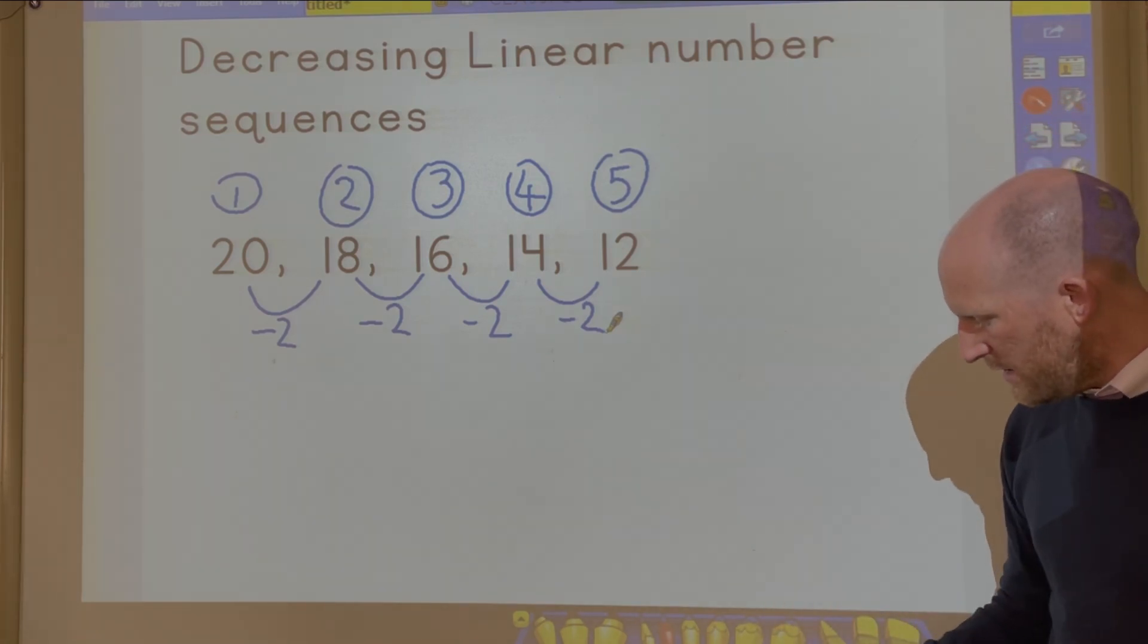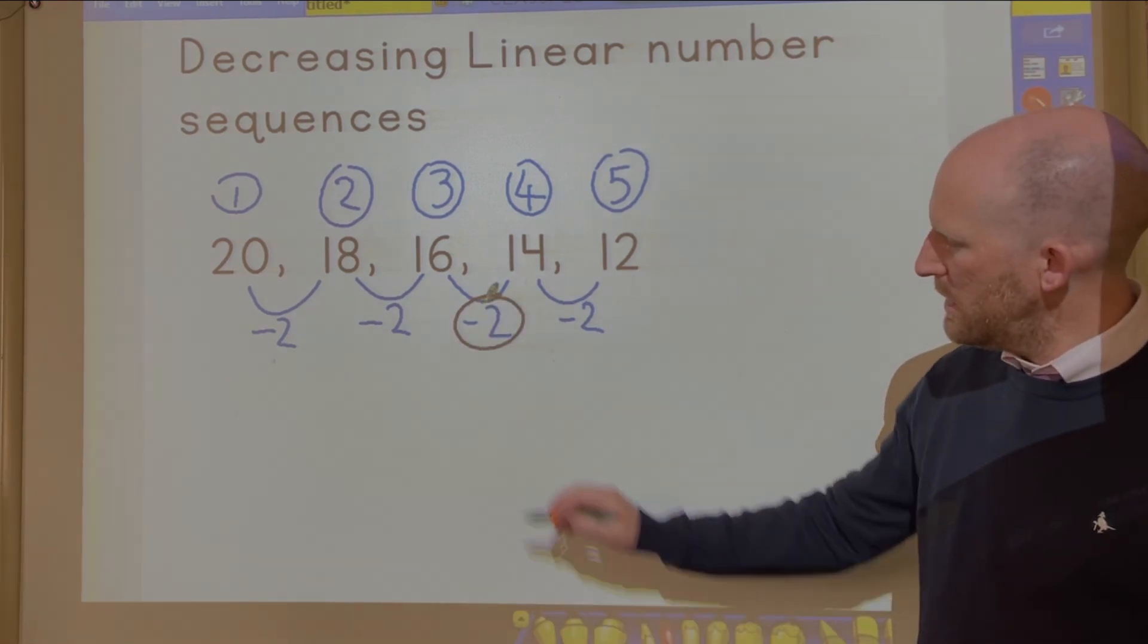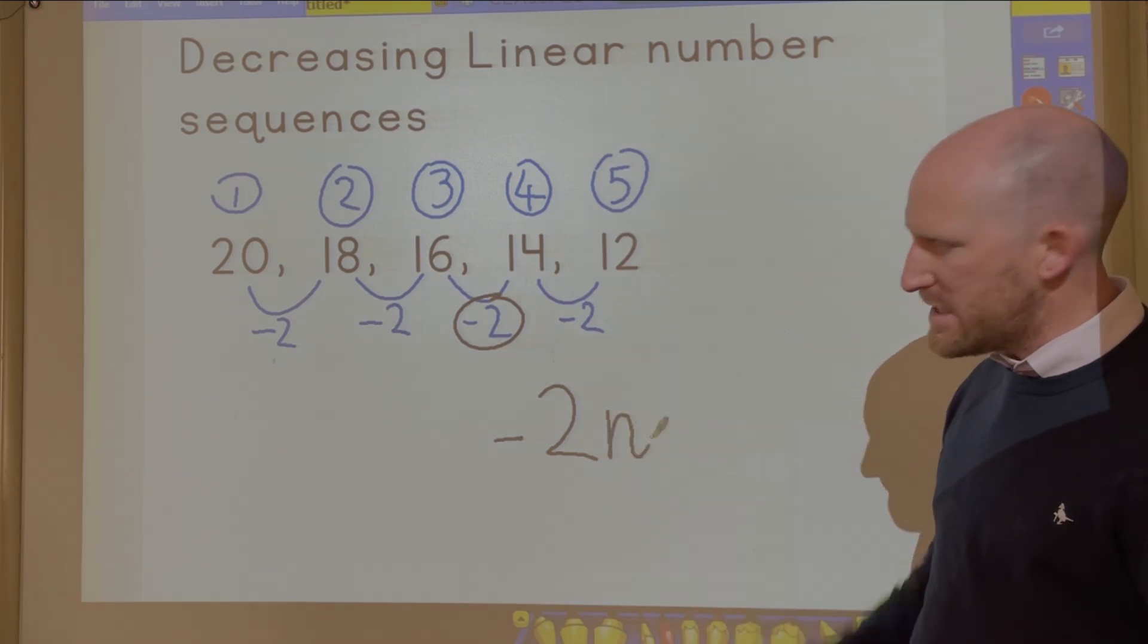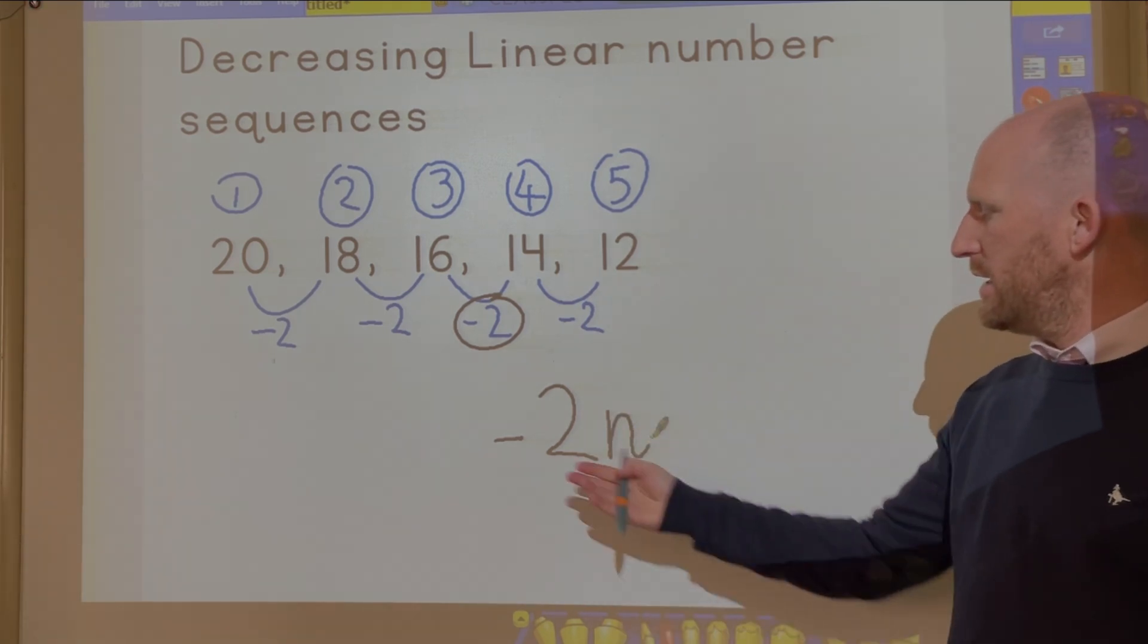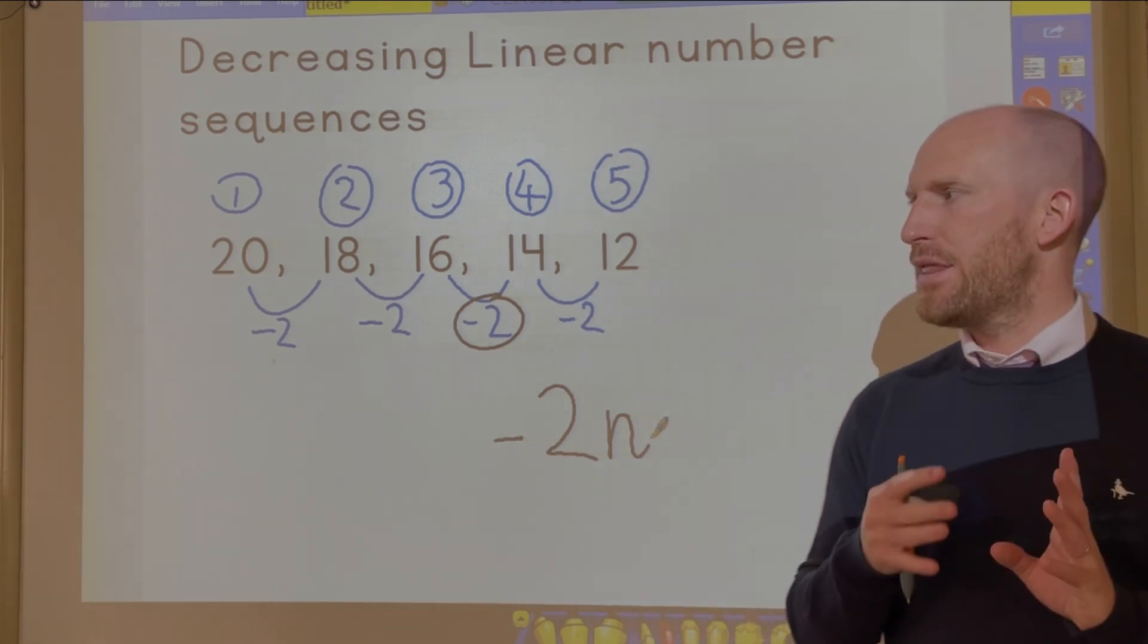Now once I've done that I take whatever the difference is, so take away 2, I write the number, the letter n next to it, and I've then completed half of my nth term.